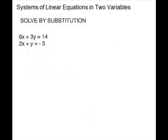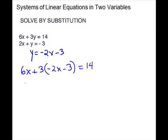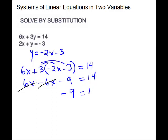For the next problem, we will need to isolate a variable to solve it by substitution. I'm going to choose to isolate the y in the second equation, which means I need to subtract 2x. So y equals negative 2x minus 3. Now I will substitute this into the first equation: 6x plus 3 times negative 2x minus 3 equals 14. So 6x minus 6x minus 9 equals 14. Notice what happens to your x terms — they cancel out. Negative 9 equals 14. You have a false statement, so there is no solution.